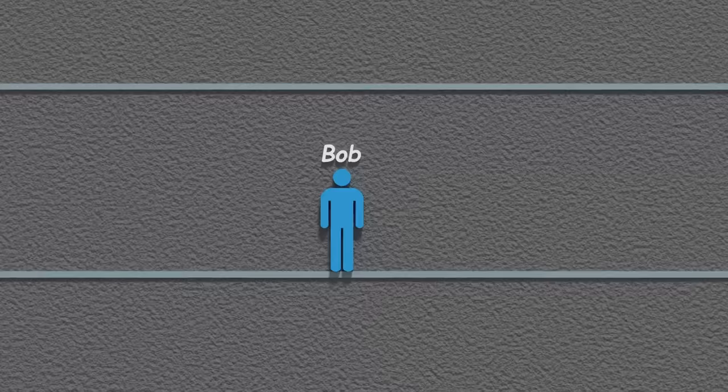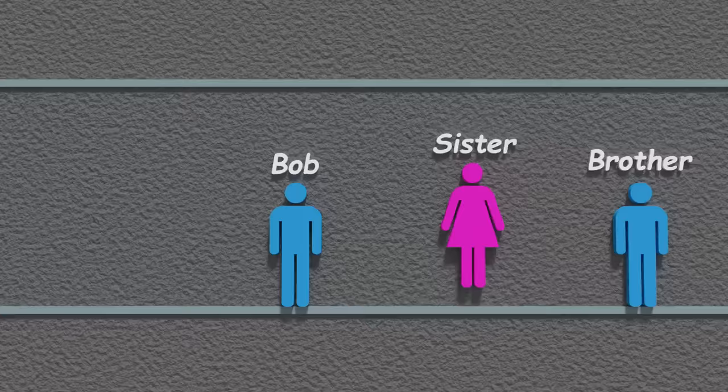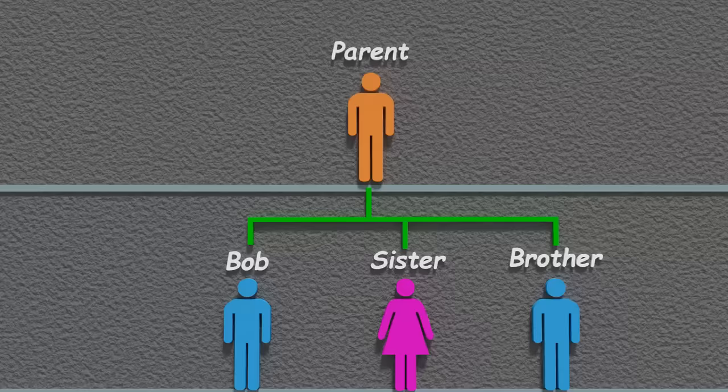Let's start with the basics. This is Bob. We use him to show different relationships with his family. Bob's immediate family consists of his brother, his sister, and his parents.